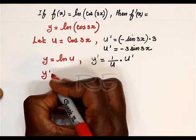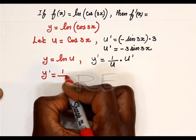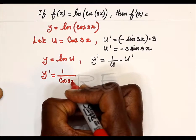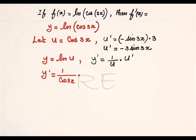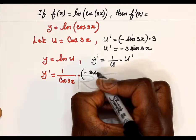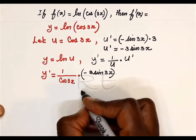Now we have to substitute. y prime is equal to 1 divided by u, which is cosine 3x, multiplied by u prime, which is negative 3 sine 3x.